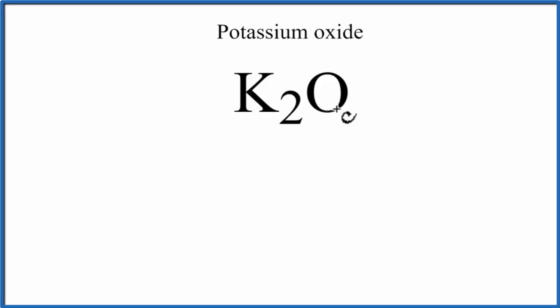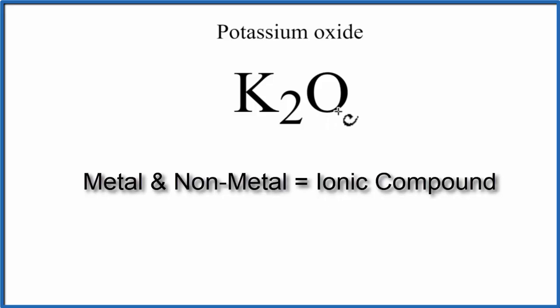Potassium K, that's a metal, and then oxygen's a non-metal. So when we have a metal and a non-metal, we have an ionic compound.